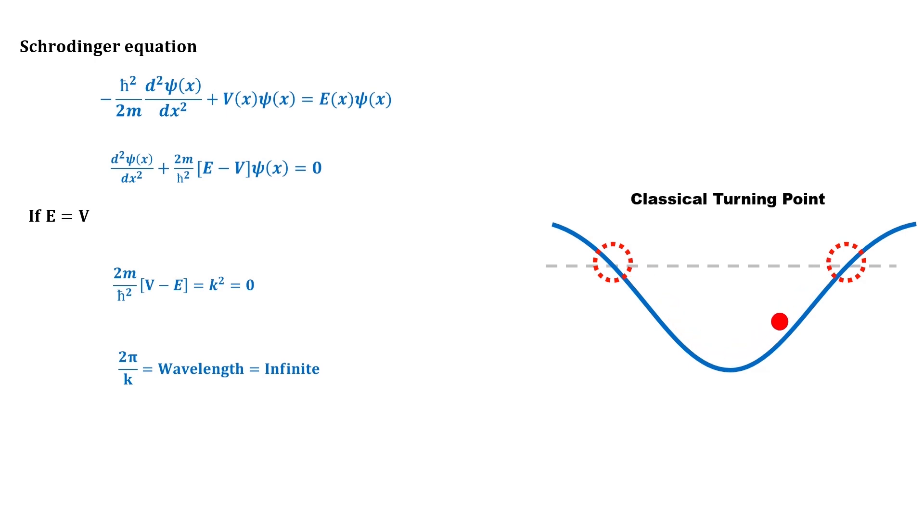The classical turning point is the point where the classically particle reverses the direction of its motion. This region is called classical region. To understand the behavior of the particle in the classical region, let's solve the Schrödinger equation. If the particle's energy is E and it is moving in V potential region, then rearranging the Schrödinger equation: d²ψ/dx² equals minus 2m upon h cross square (E minus V)ψ.